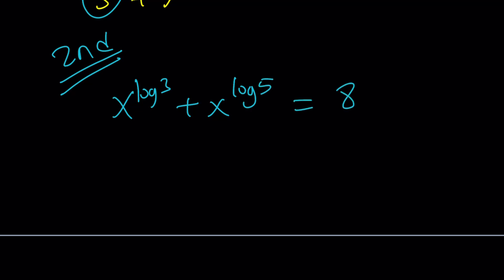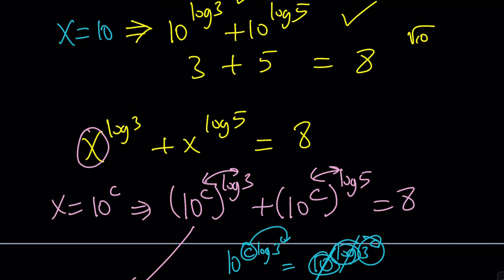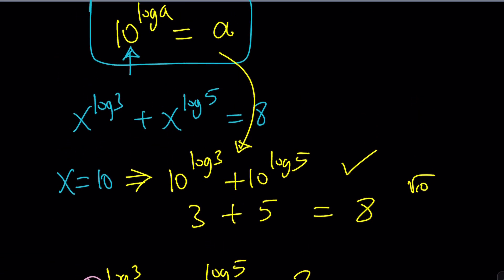So, here's how the second method works. Since we had this identity, remember, 10 to the power log a is equal to a, because this actually is equivalent to a to the power log 10. Because a is equal to a to the power 1, which is equal to a to the power log 10. Here's what I'd like you to notice. Look at the 10, look at the a. You see what I'm talking about?